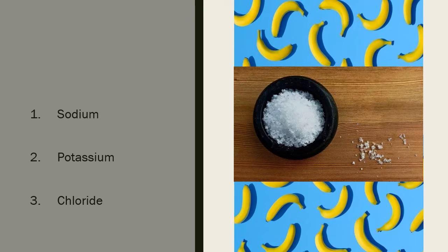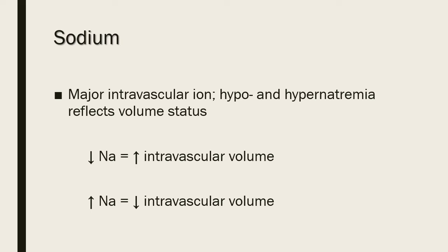Electrolytes are ordered just as often as the CBC, and for good reason. The ones you'll see are sodium, potassium, and chloride. Sodium, in most cases, is reflective of the intravascular fluid volume, or extracellular fluid. It is a major intravascular ion that determines ECF volume and osmolality. Decreases in sodium can usually be attributed to increased intravascular volume diluting the sodium, and increases in sodium are reflective of intravascular volume depletion. There are a vast number of causes for hypo- and hypernatremia, but volume is an extremely important and common consideration.